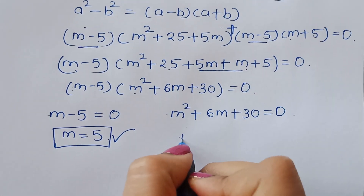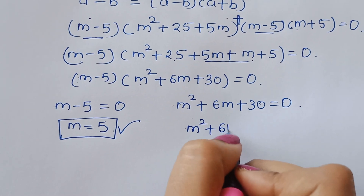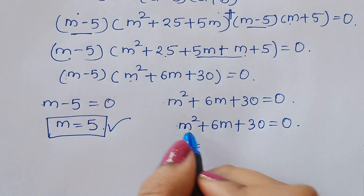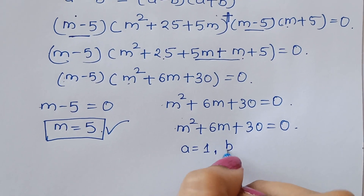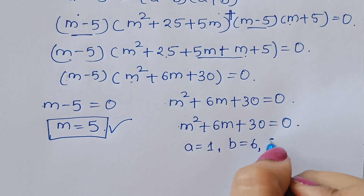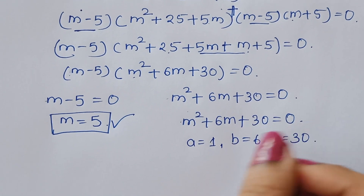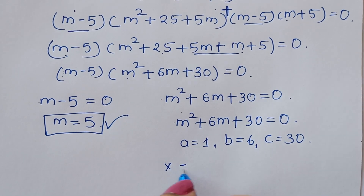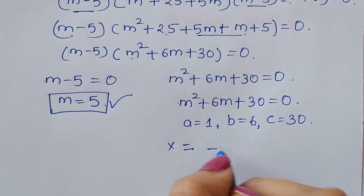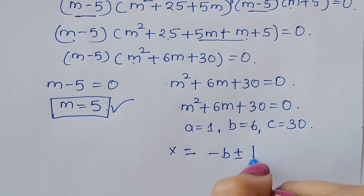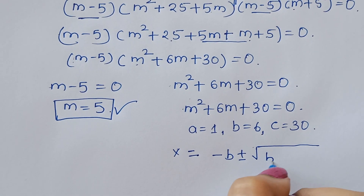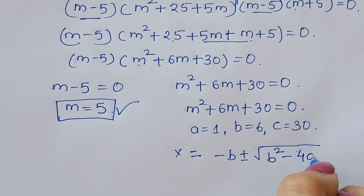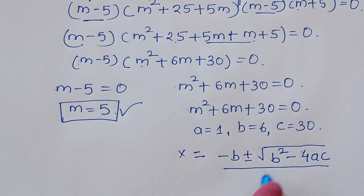Next, we solve m square plus 6m plus 30 is equal to 0. Here the coefficient a is equal to 1, b is equal to 6, and c is equal to 30. Using the quadratic formula, x is equal to minus b plus or minus square root of b square minus 4ac, divided by 2a.